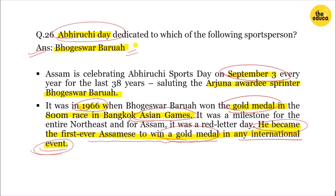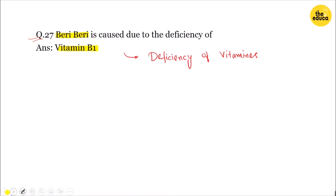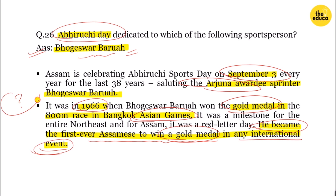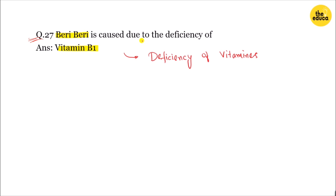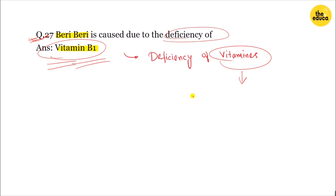The next question is about Beriberi disease. Beriberi is caused by a deficiency of Vitamin B1. If you don't take enough Vitamin B1, you develop this deficiency. We should also know what deficiencies of Vitamins A, C, D, and K cause.